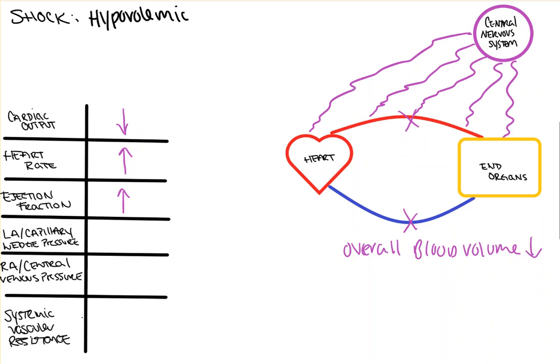Always remember, for all of these, cardiac output is equal to heart rate times stroke volume (CO = HR × SV). And as your stroke volume goes down as a function of your decreased total blood volume, your heart rate has to then go up to compensate in order to keep your cardiac output constant. And that's what's happening here.